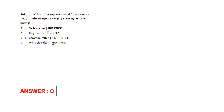The answer is option C — Common Rafter. The rafter which supports the extent from Eaves to Ridge is called a Common Rafter. So, answer option C.